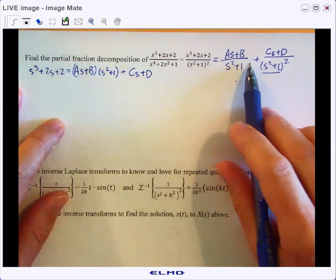So to get a common denominator here, I just need to times top and bottom of this term by the quantity S squared plus one.